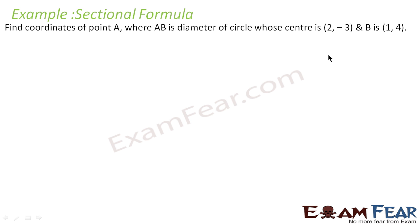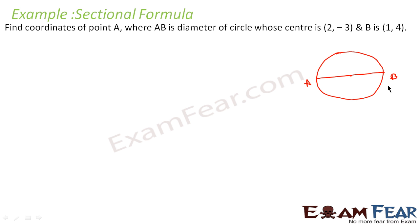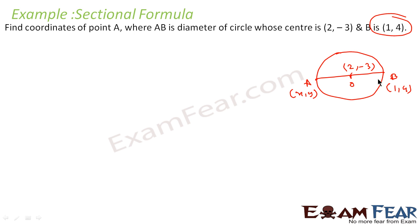Find the coordinates of a point A, where AB is the diameter of the circle whose center is (2, −3) and B is (1, 4). So let us draw a circle where AB is the diameter. B is given as (1, 4) and the center O is (2, −3). We have to find the value of point A, and let A be (x, y).